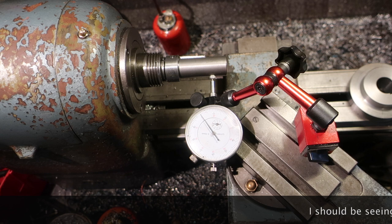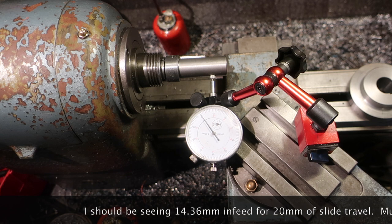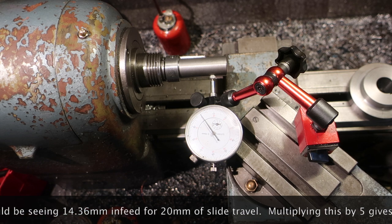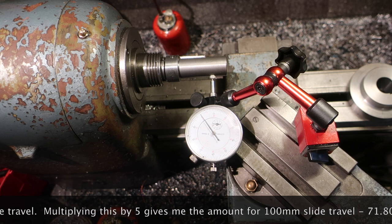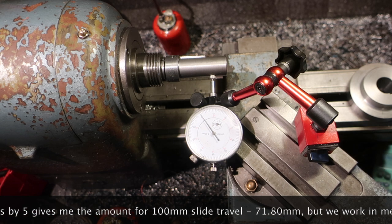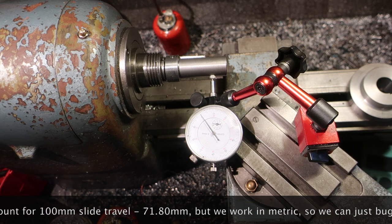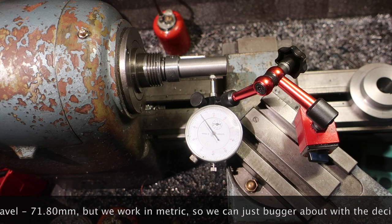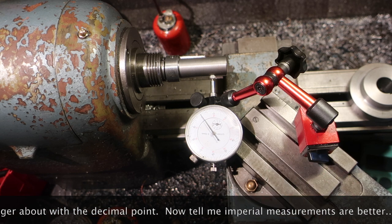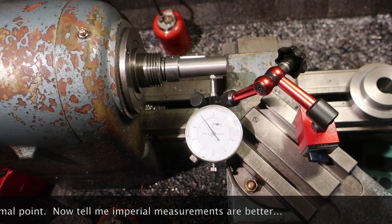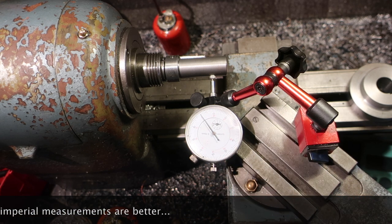So, 1436 is the number we're looking for. And if we multiply that by 5, because that's for 20mm, we can get it for 10mm. So for 10mm we should get 7.18mm in.